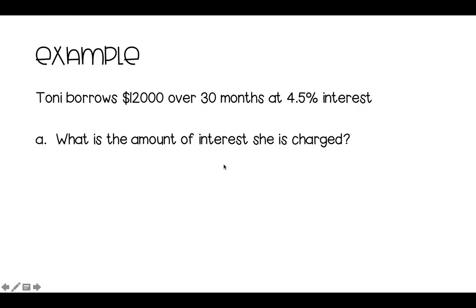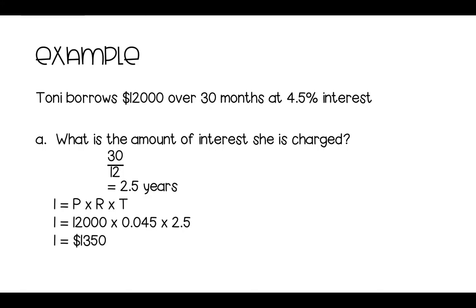So Tony borrows $12,000 over 30 months at a 4.5% interest rate. So what is the amount of interest she is charged? So we go 30 divided by 12 first to find out that we have two and a half years. So she borrowed it over two and a half years. We go so interest equals principal times rate times time. So that gives us 12,000 times 0.045 times 2.5. So the interest paid is $1,350.